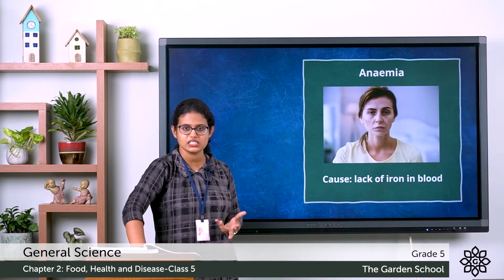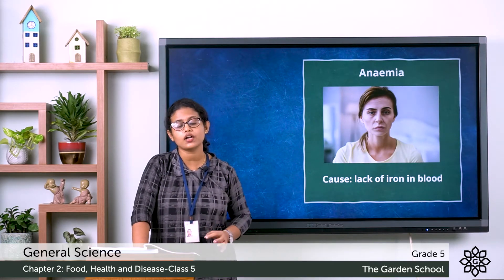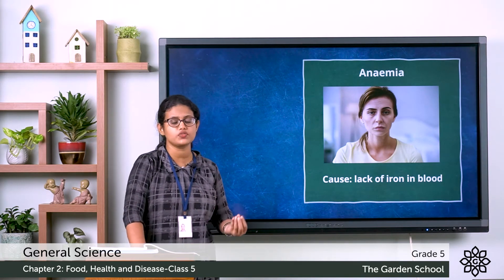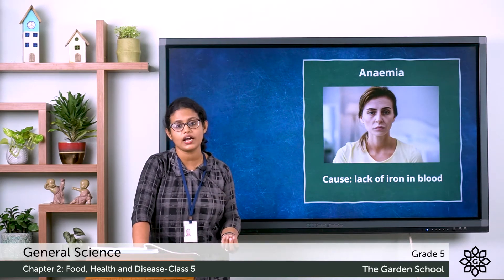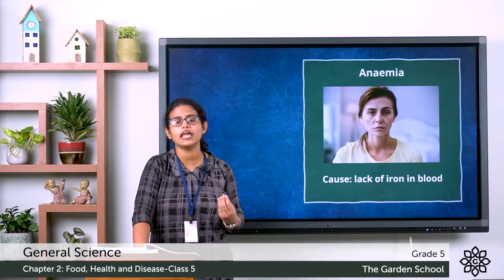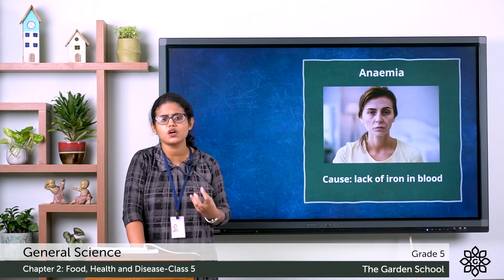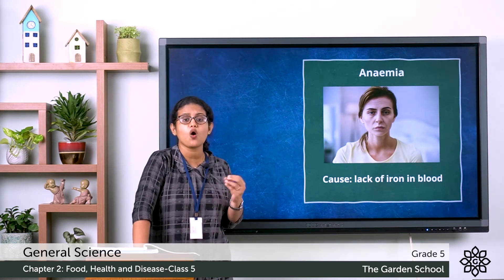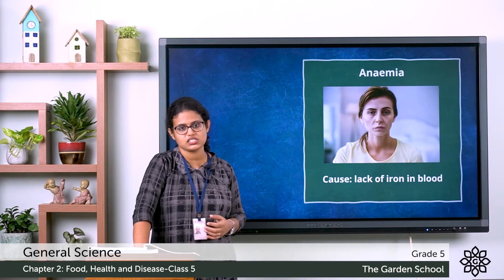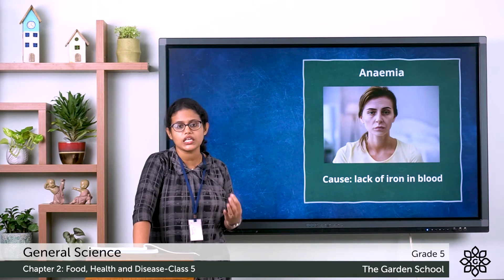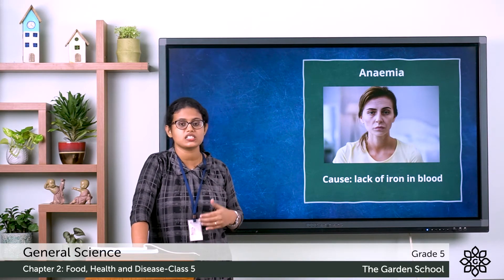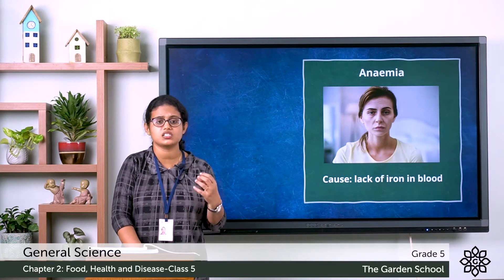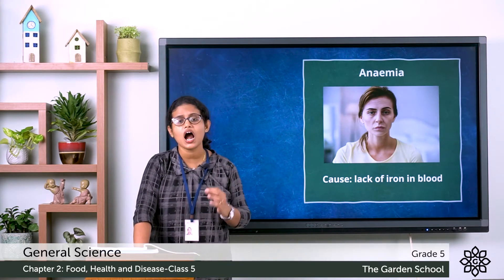Anemia is caused due to lack of iron in the blood. Our body needs iron to make blood. Symptoms of anemia include pale skin, pale nails, and dark patches under the eyes. A person suffering from anemia will have less hemoglobin because of lack of iron. This disease can be cured by having iron rich food.